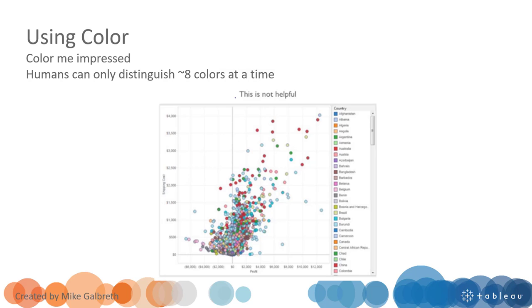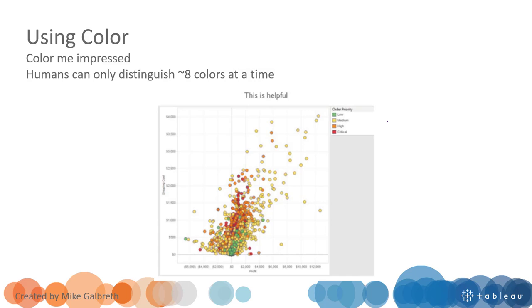This is one example - this one has so many colors and it is not helpful to remember or to distinguish those different countries. So try to reduce the number of the colors.